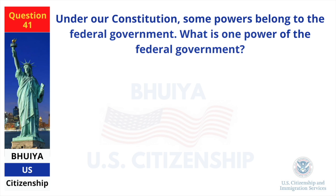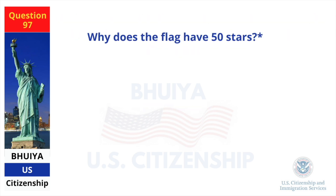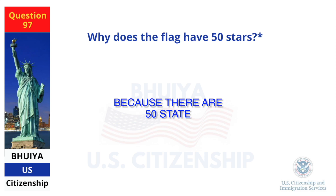Under our Constitution, some powers belong to the federal government. What is one power of the federal government? To print money. Why does the flag have 50 stars? Because there are 50 states.